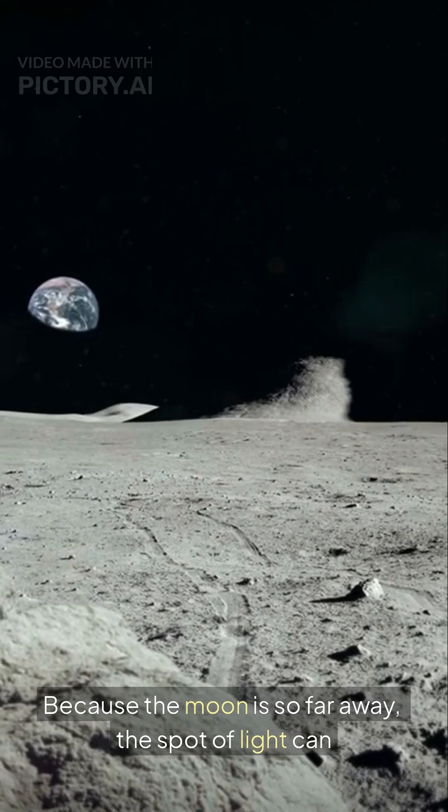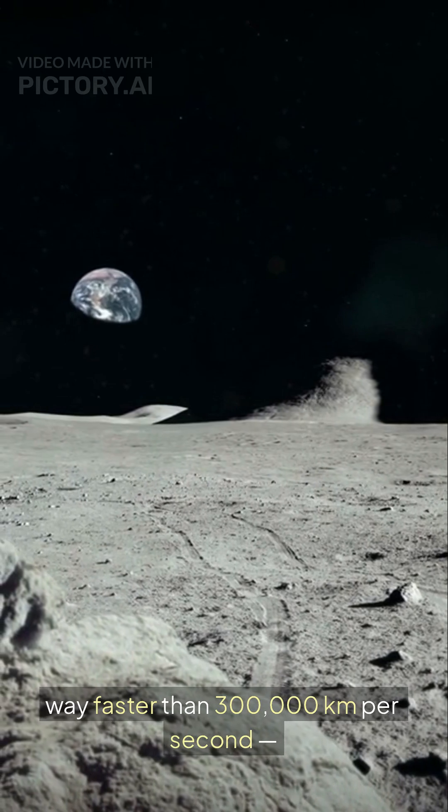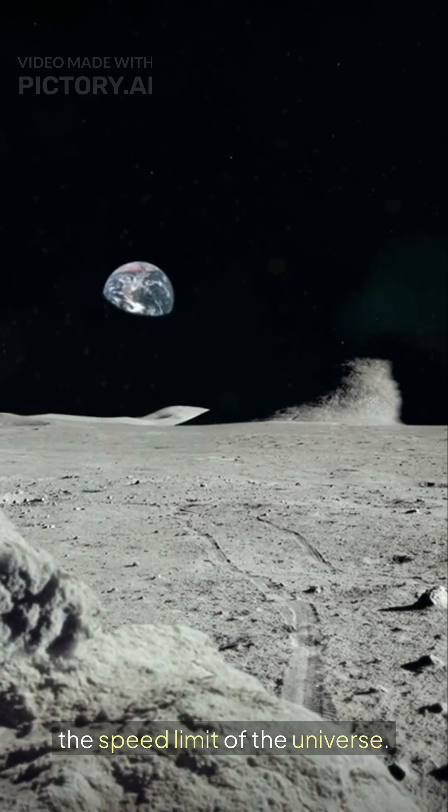Because the moon is so far away, the spot of light can sweep across its surface way faster than 300,000 kilometers per second, the speed limit of the universe.